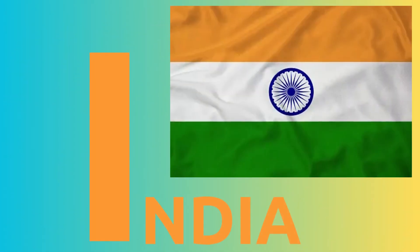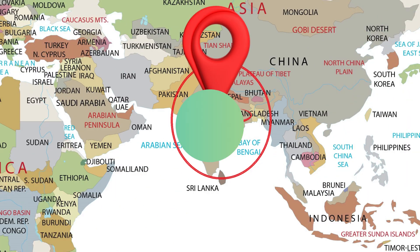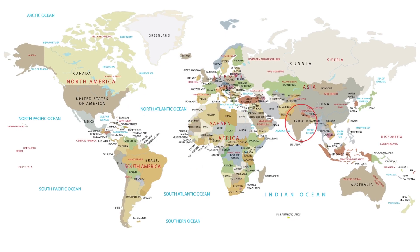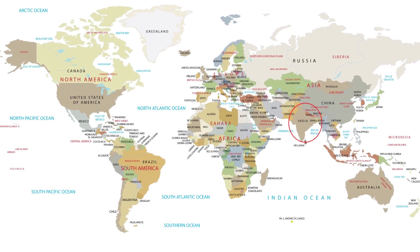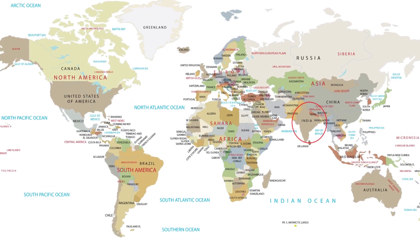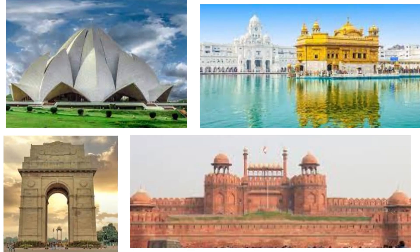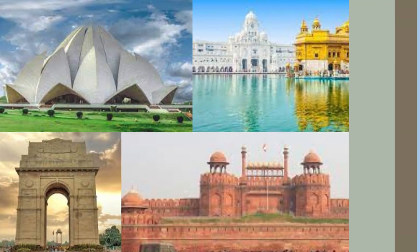I. I for India. Official name: Republic of India. India was the first country to mine diamonds. India is the second largest English-speaking country in the world.